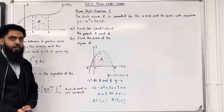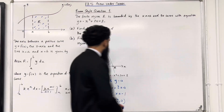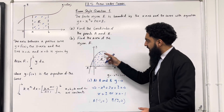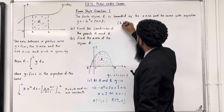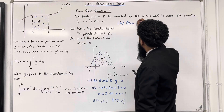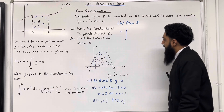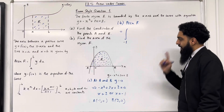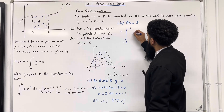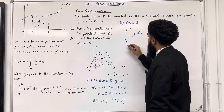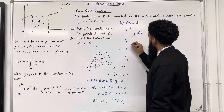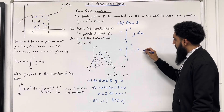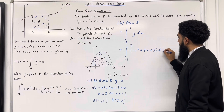This completes Part A of exam-style question 1. Let's have a look at Part B: find the area of the region R. So we're trying to work out the shaded area. By definition, area R is given by the integral from the lower limit — the x-coordinate of A, which is -1 — to the upper limit — the x-coordinate of B, which is 3 — of y dx. So we're integrating from -1 to 3 of (-x² + 2x + 3) dx.